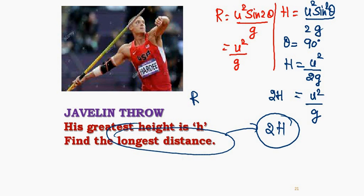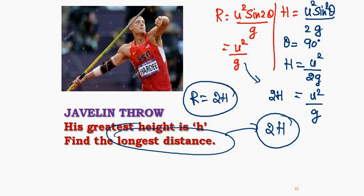So automatically we can say that the longest distance might be 2 times the maximum height. R equals 2H. What might be the longest distance? Twice the maximum height — of course, assuming no air friction and similar conditions.